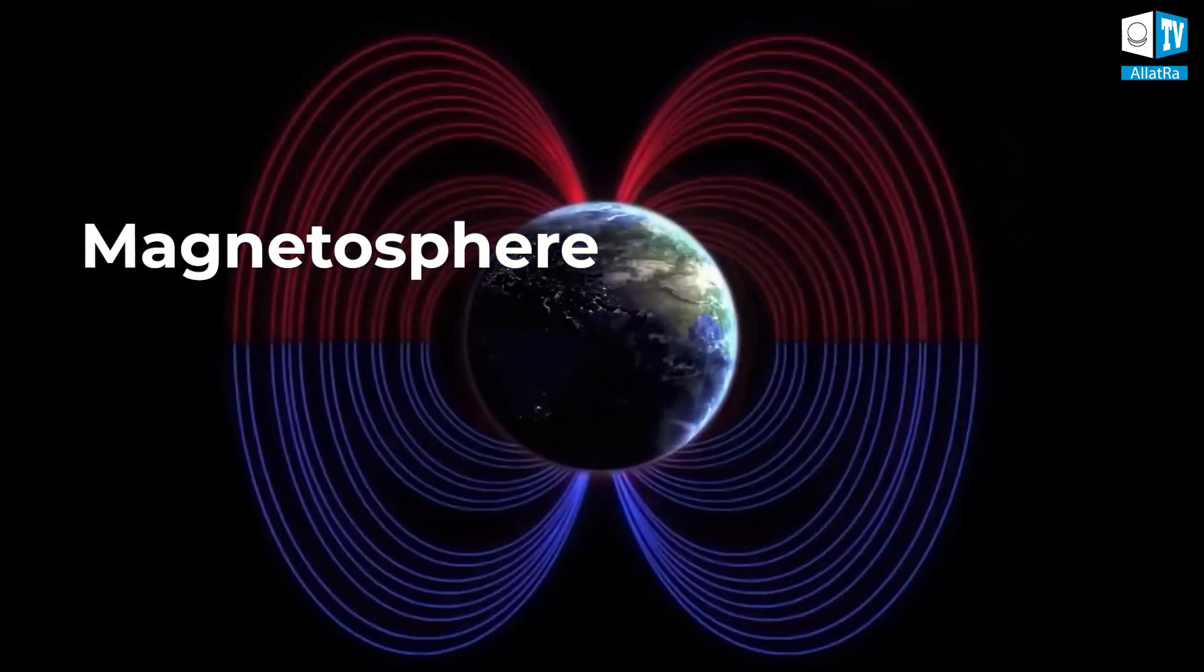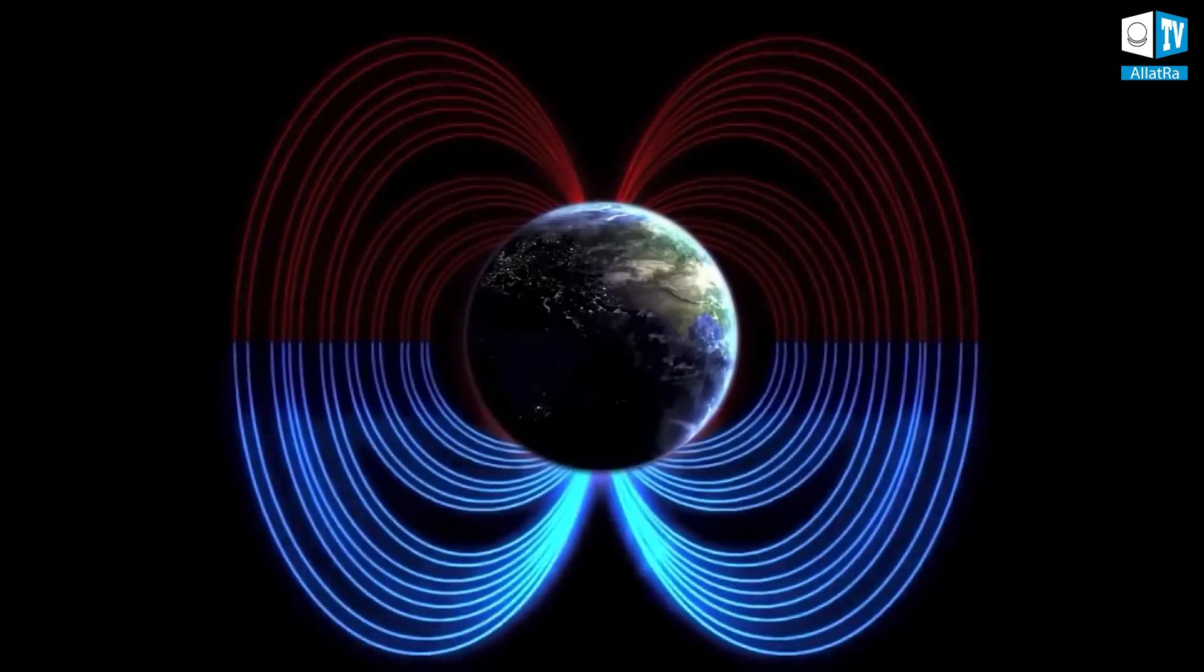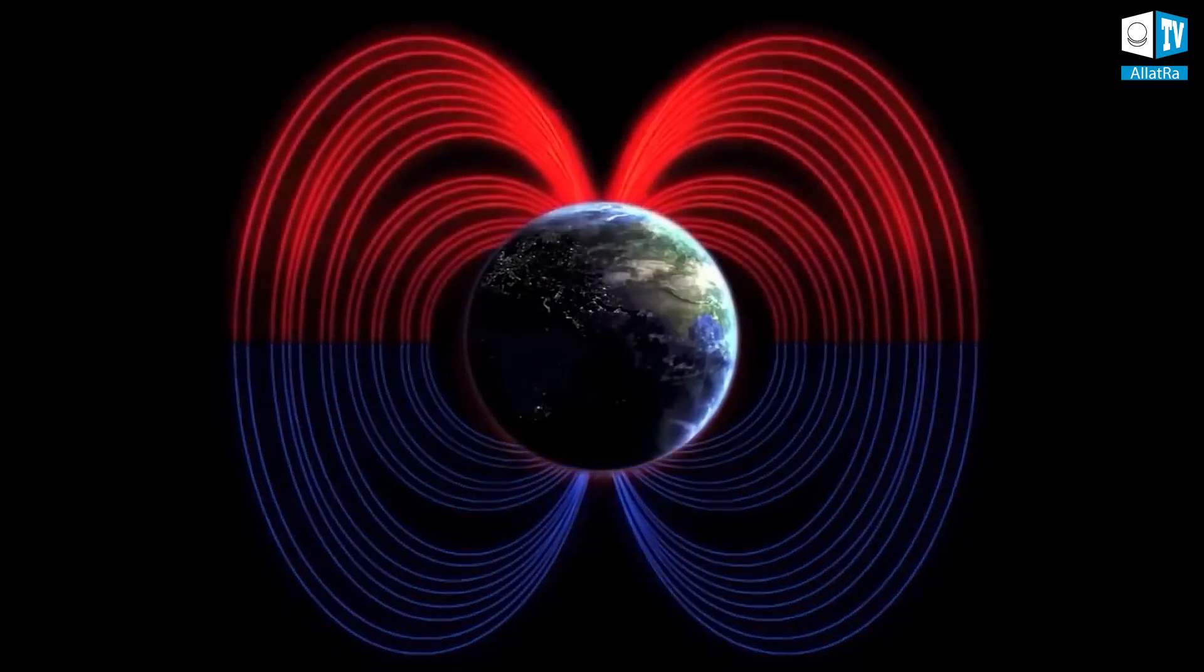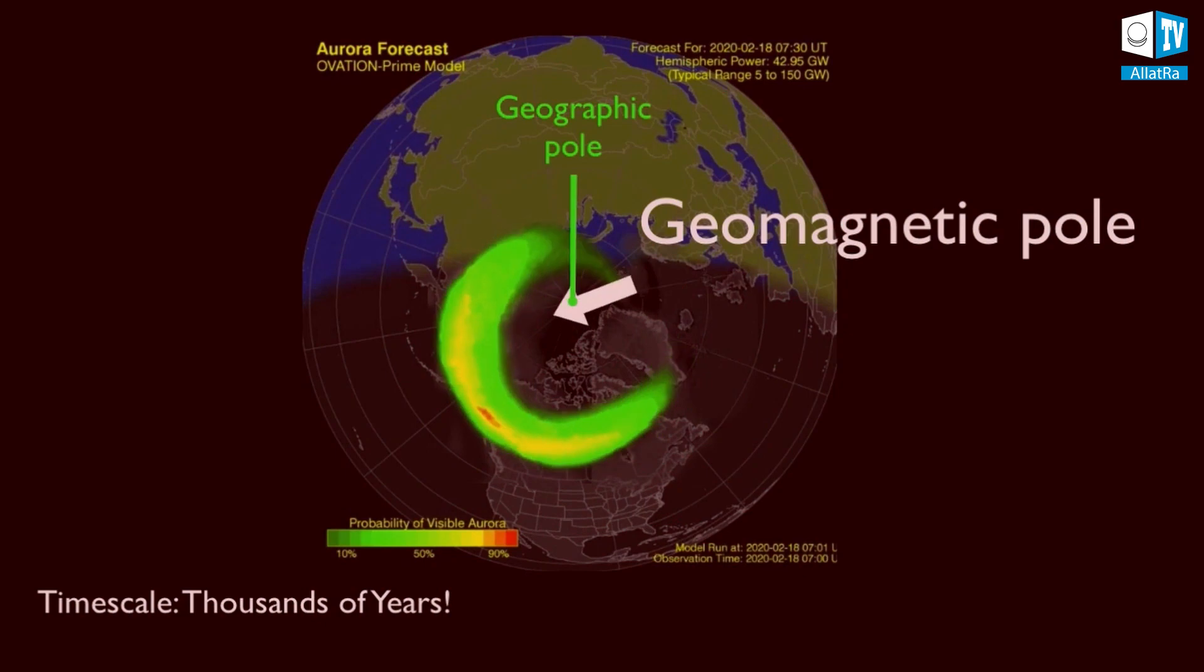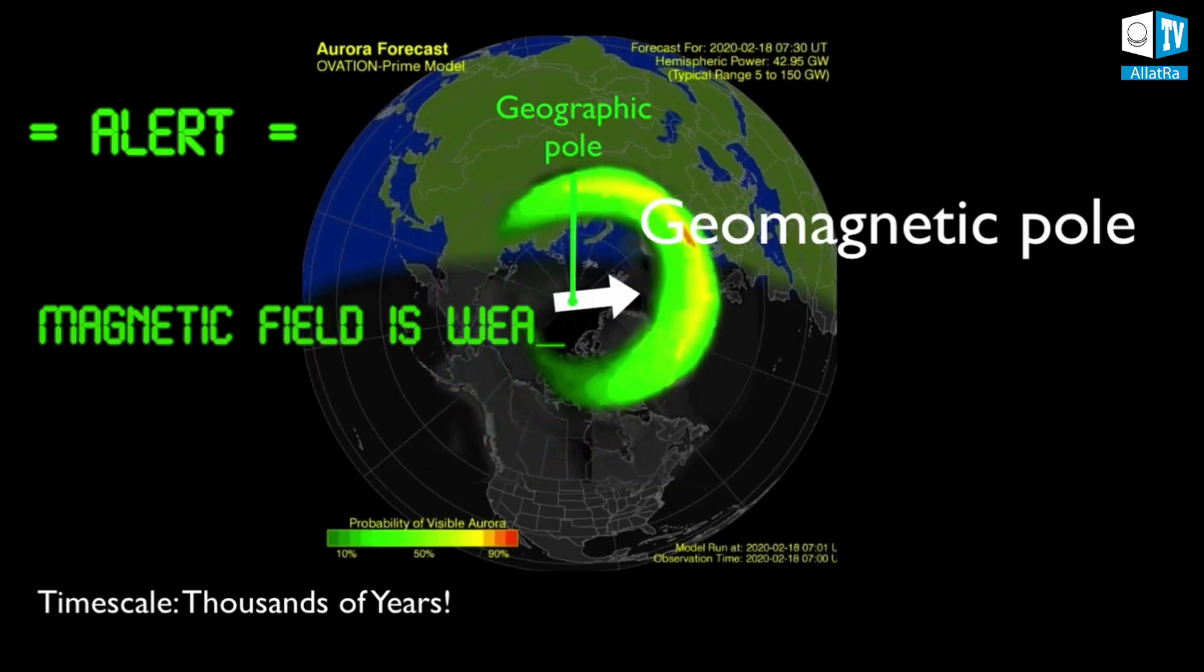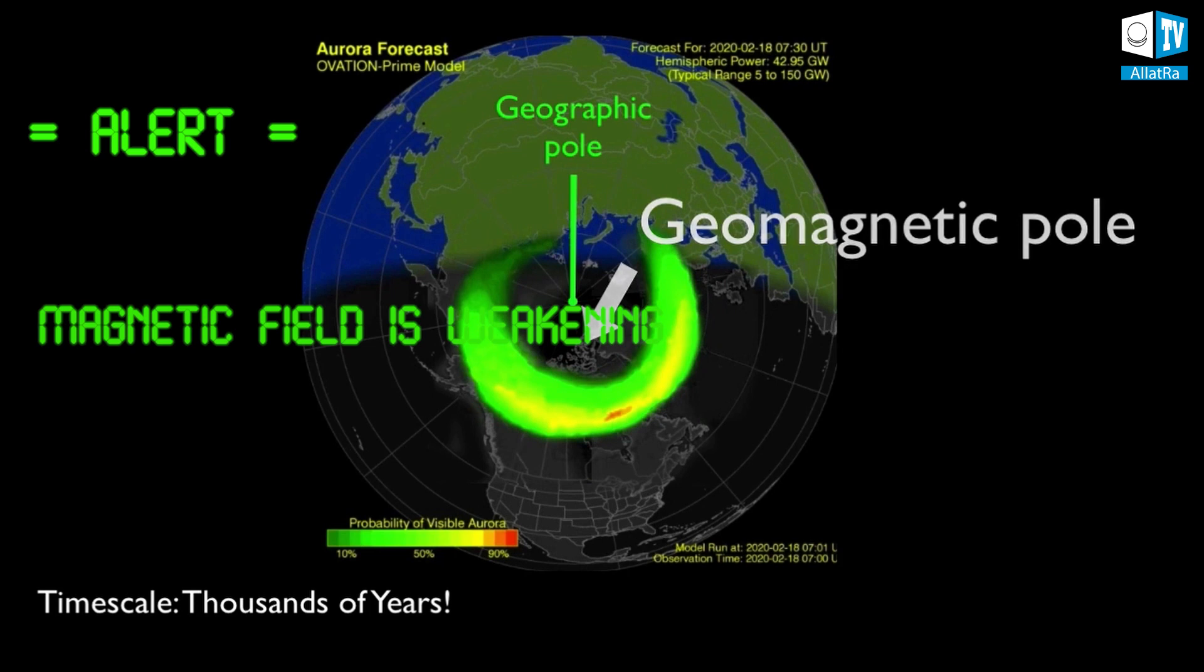The outer boundary of the ionosphere is also the outer part of the Earth's magnetosphere. Warning! Magnetic field is weakening. Dramatic shift of the magnetic north pole.